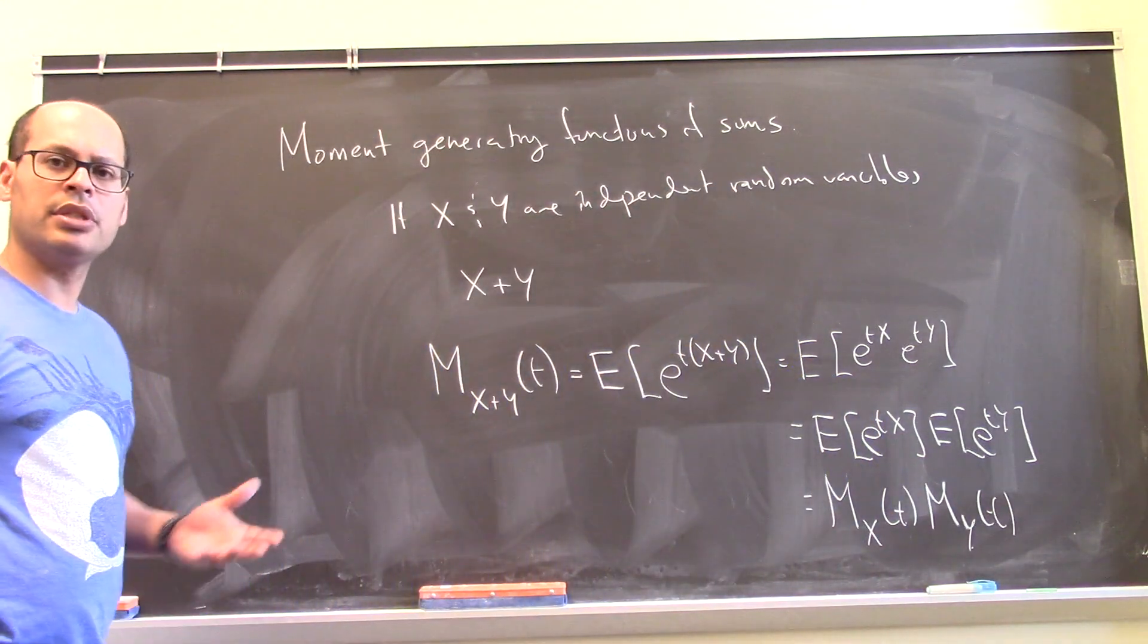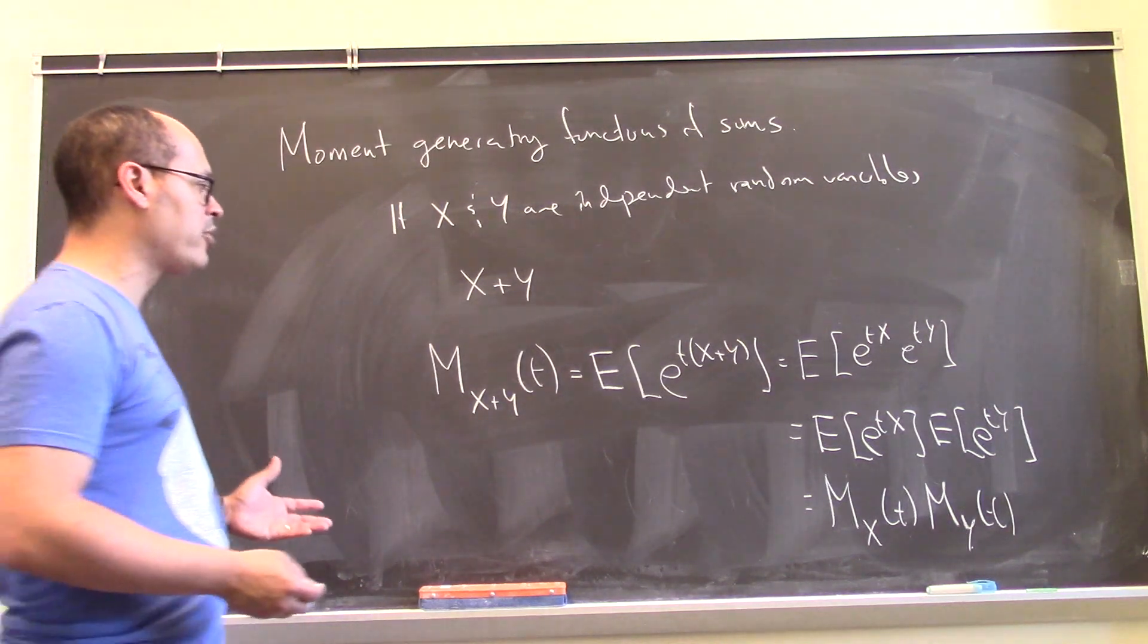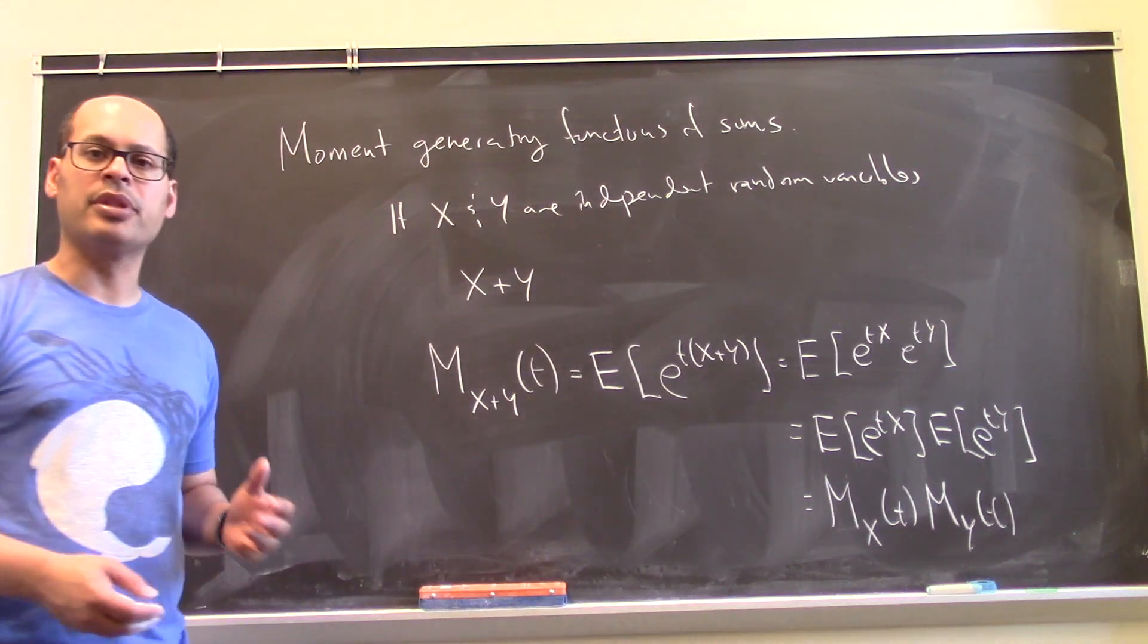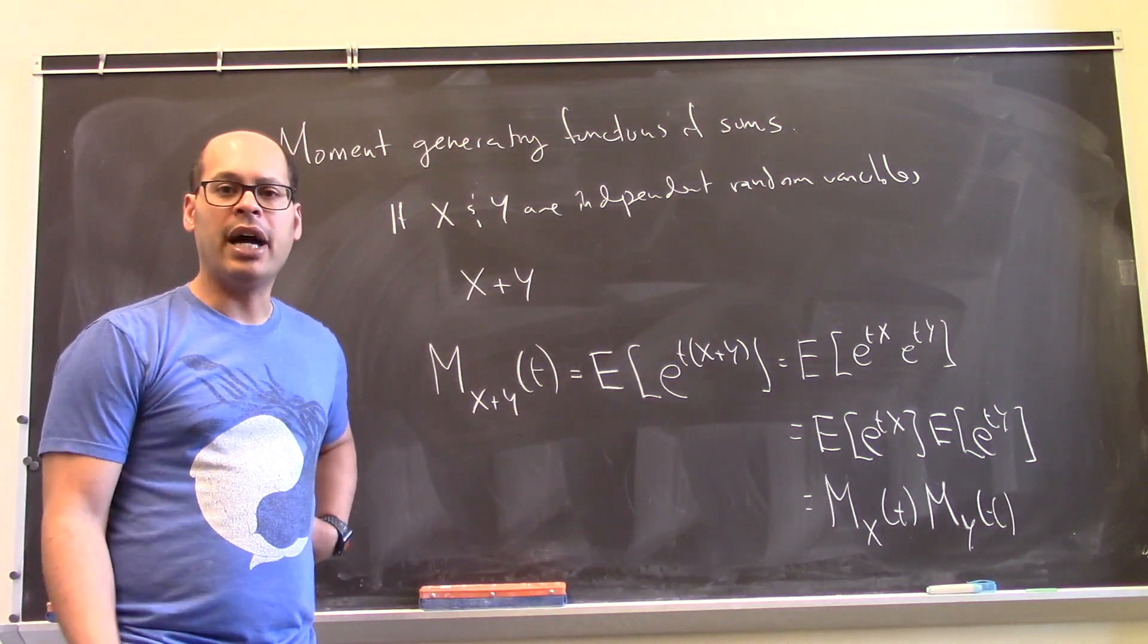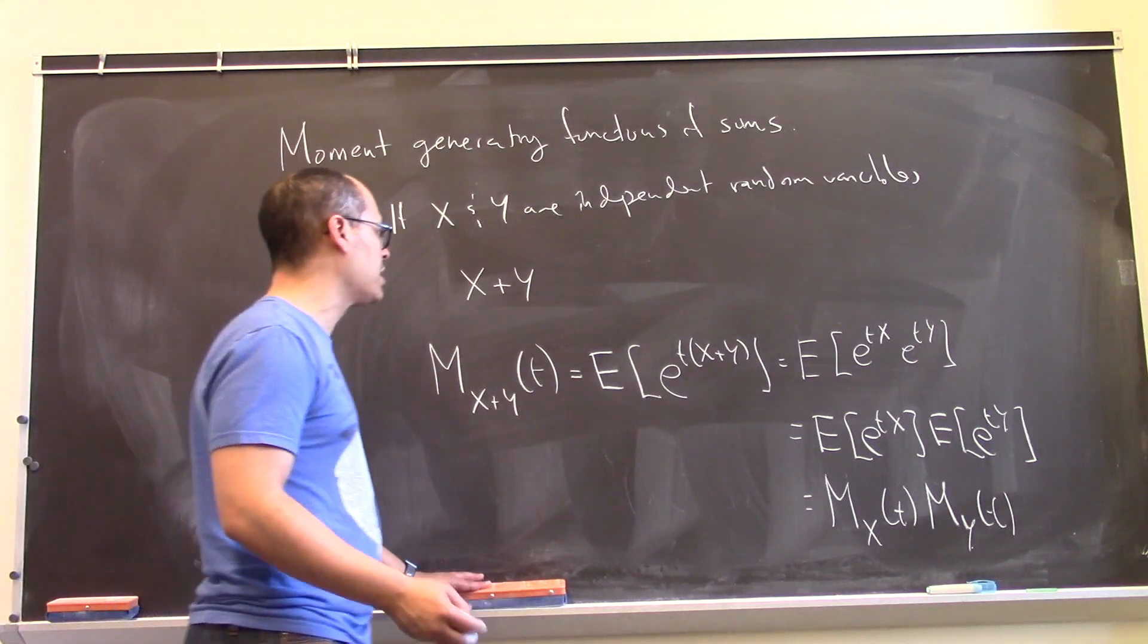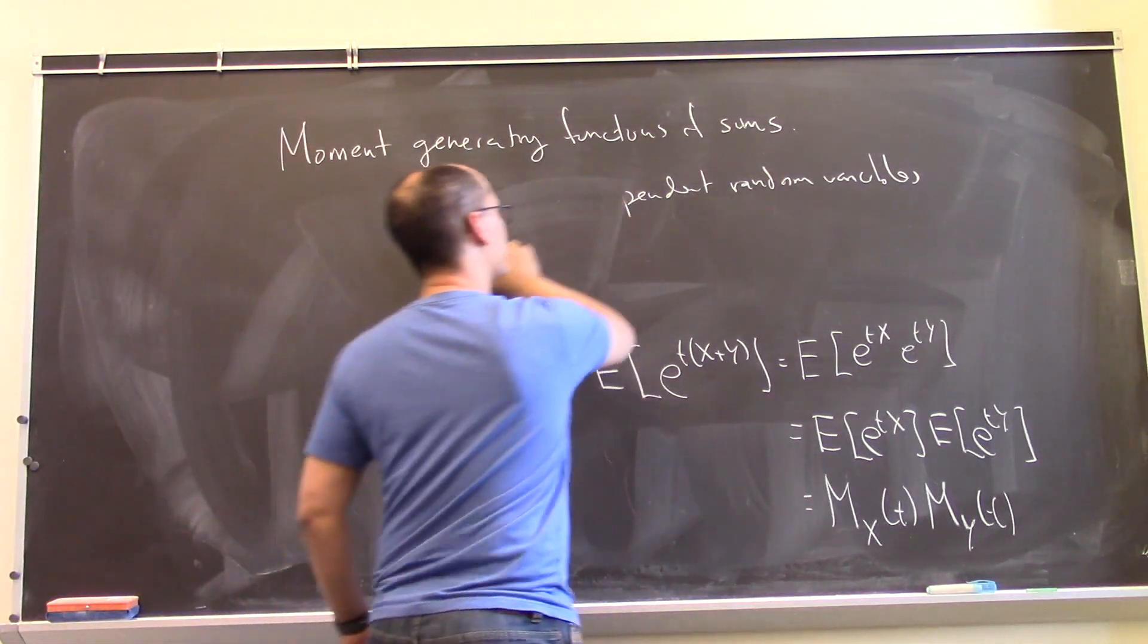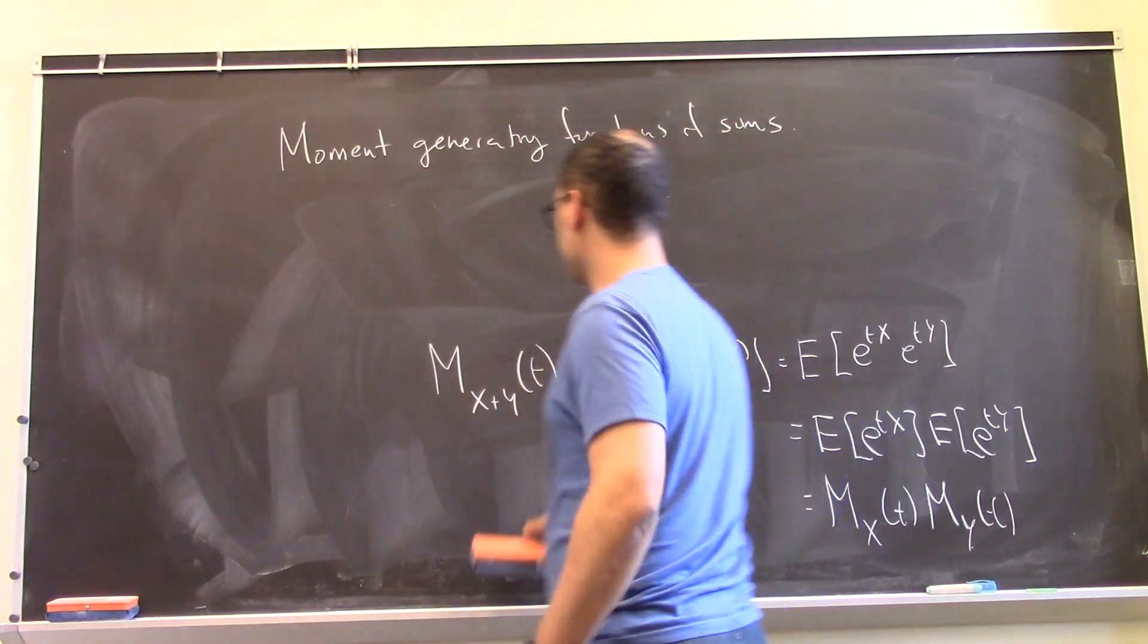So this is nice because it gives us some quick information about the sum of random variables and sometimes it actually helps us identify the sum of random variables as another known random variable. Let me give an example of that.